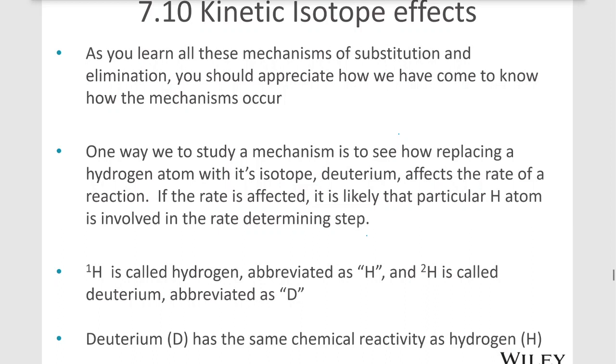If a chemist wants to determine a mechanism for a reaction, and if the suspected mechanism has a hydrogen in it, then a chemist may replace that hydrogen with one of its isotopes called deuterium.